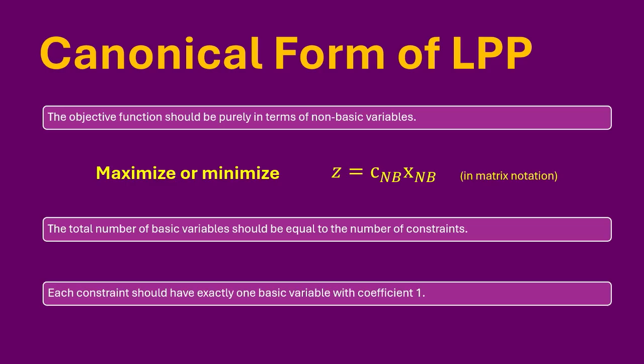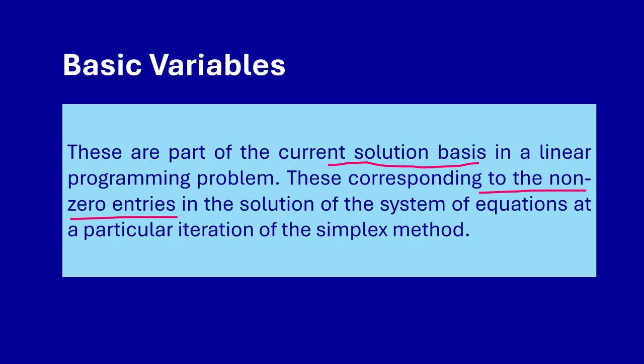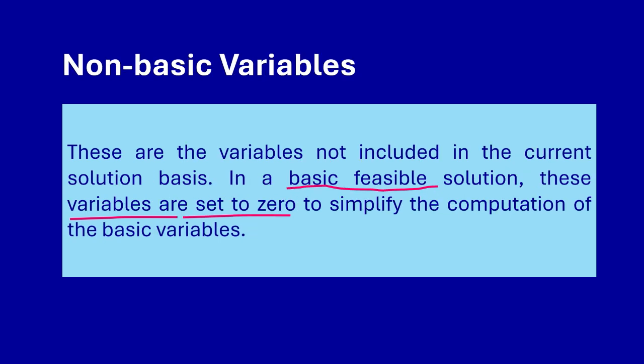Let's first see what basic and non-basic variables are. Basic variables are part of the current solution basis in an LPP. These correspond to the non-zero entries in the solution of the system of equations at a particular iteration of the simplex method. Non-basic variables, on the other hand, are the variables that are not included in the current solution basis. In a basic feasible solution, these variables are set to zero to simplify the computation of the basic variables.